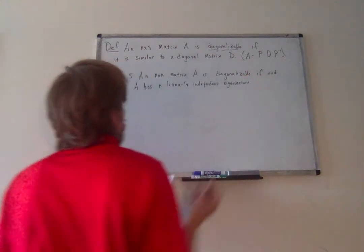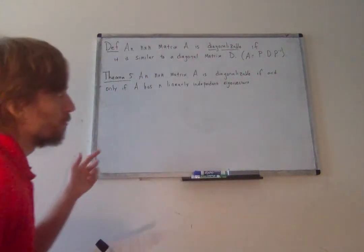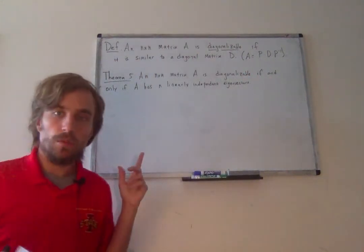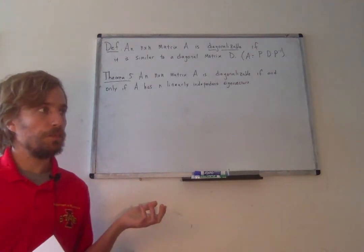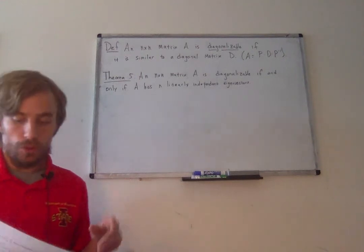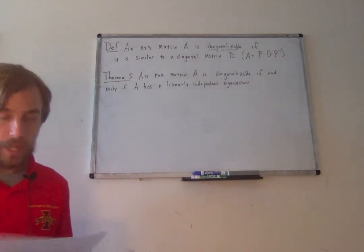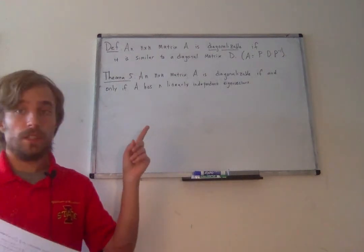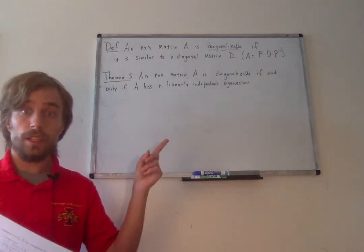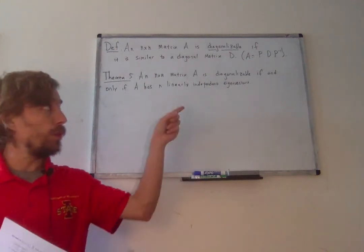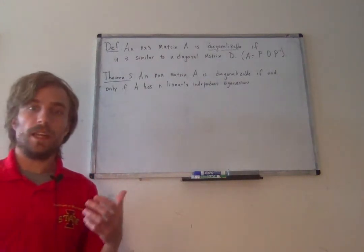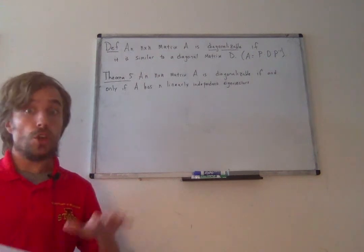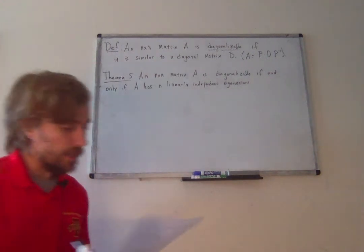So that's nice — we know exactly when it's diagonalizable. We just have to calculate its eigenvalues and eigenvectors. But we actually know more. We know what the diagonal matrix D is going to look like, and we know what the matrix P is going to look like. So not only do we know when it's diagonalizable, we actually know how to diagonalize it.